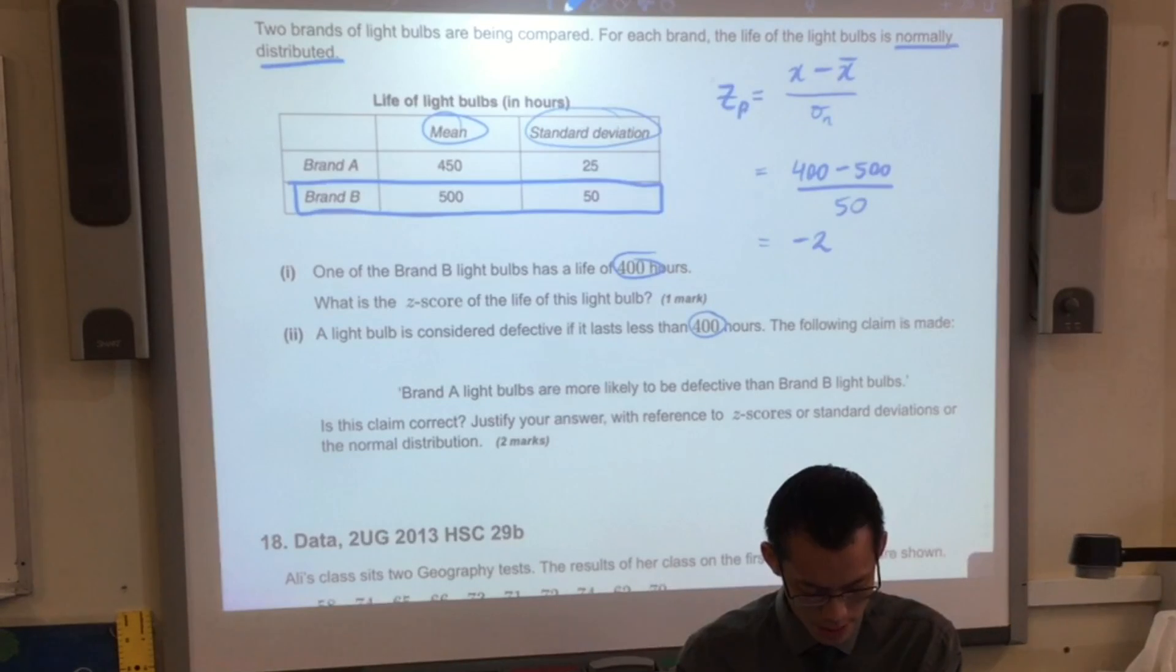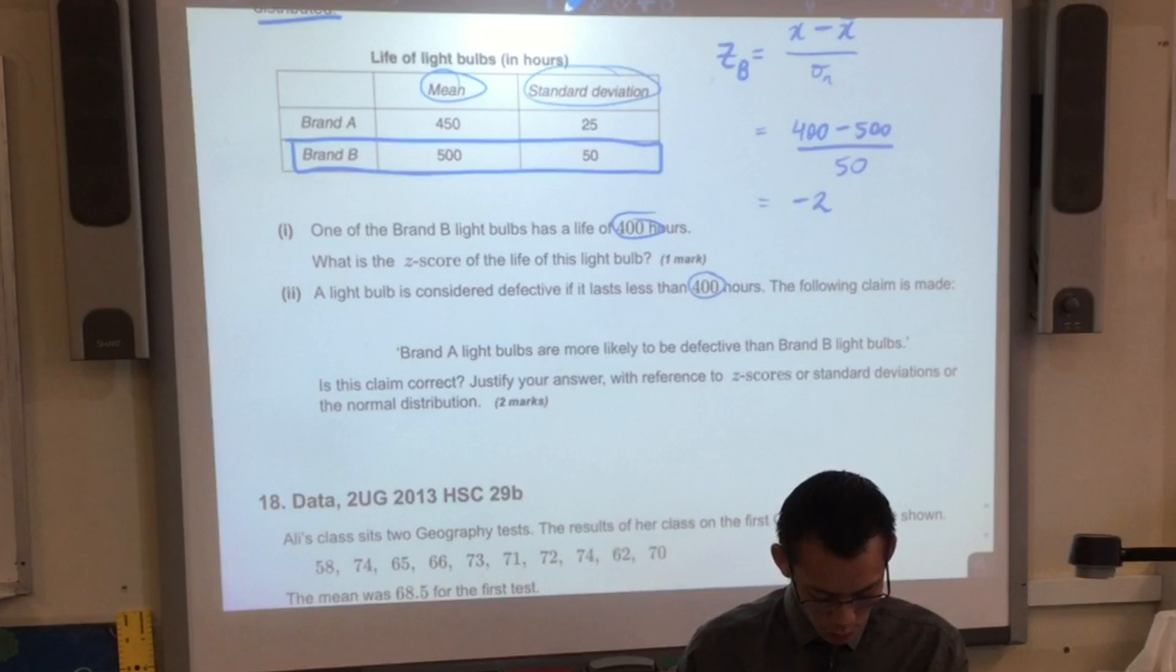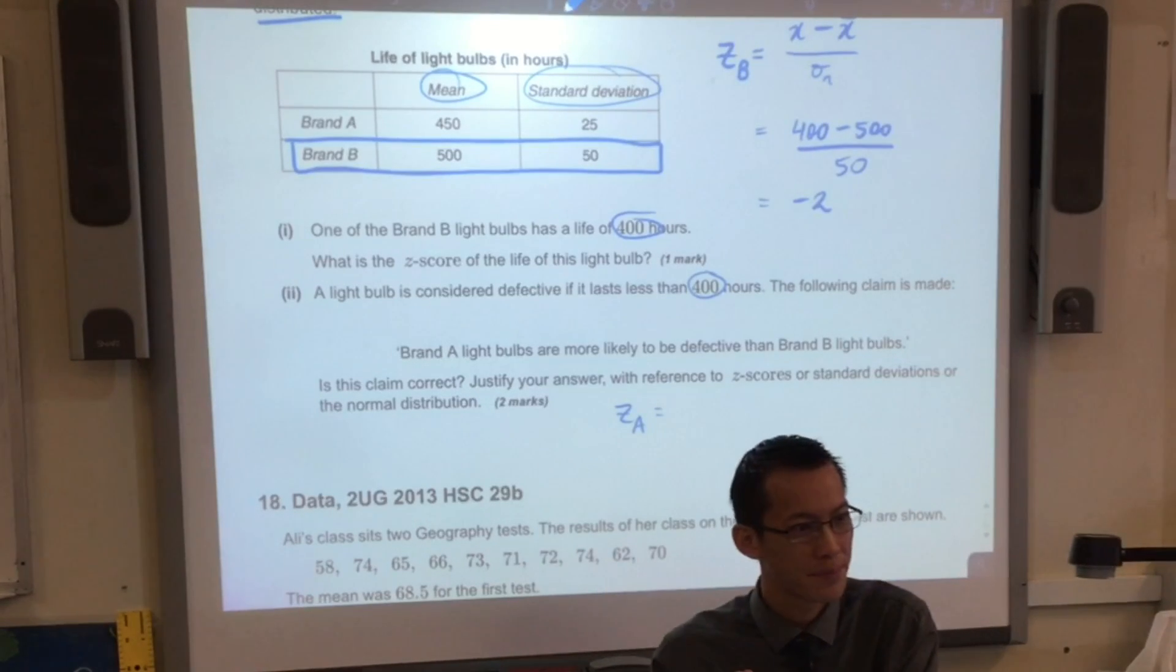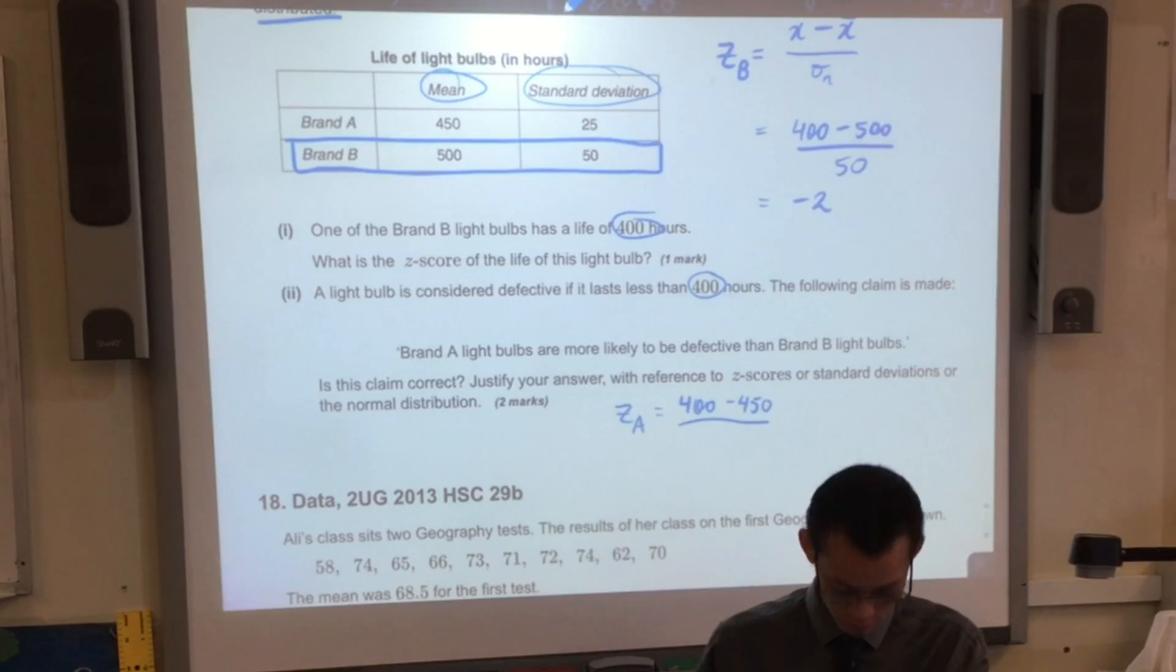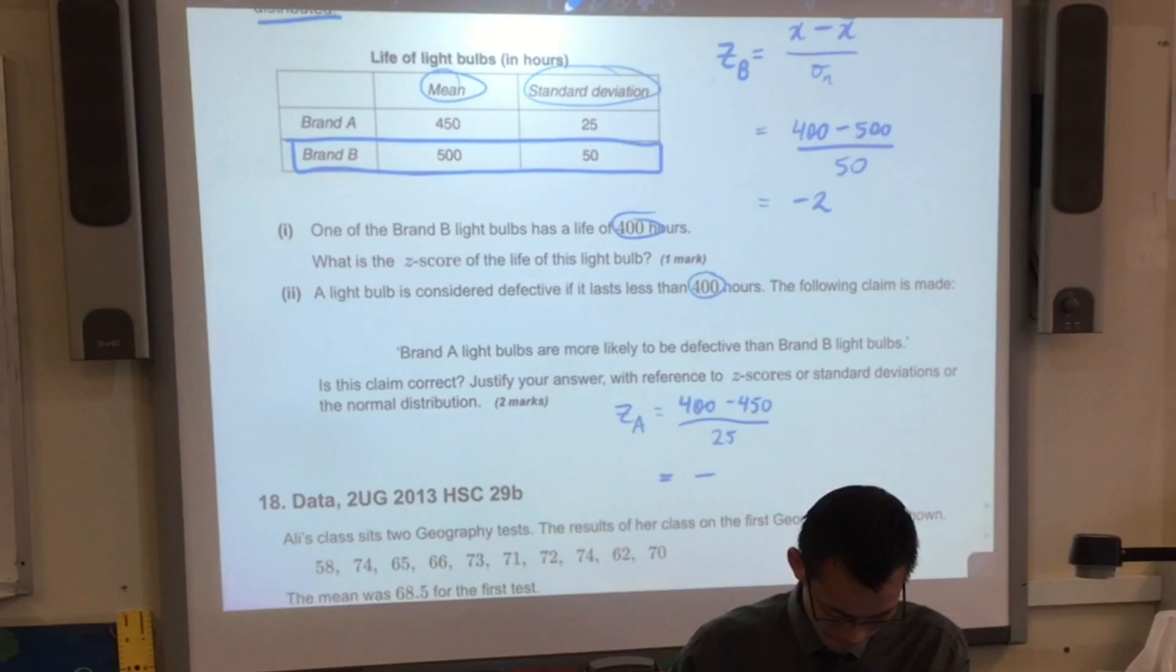So we worked out the Z-score for a 400-hour light bulb. You see why they chose that time, by the way, right? 400 for the borderline of defective light bulbs. We did that for brand B, but we can do it for brand A as well. Let's have a go at that now. So I'm going to call this one up the top the Z-score of the B light bulb, because that's what question 1 was about. And now I'm going to work out the Z-score of the A light bulb, if it lasted exactly the same amount of time. So what am I going to substitute in my formula? What numbers are we going to put in? 400, take away 450, because that's the new mean on my new group of data. What will I divide by? 25. There's a different mean, there's a different standard deviation. On the numerator, I'm pretty sure that's negative 50. Negative 50 divided by 25 is negative 2.